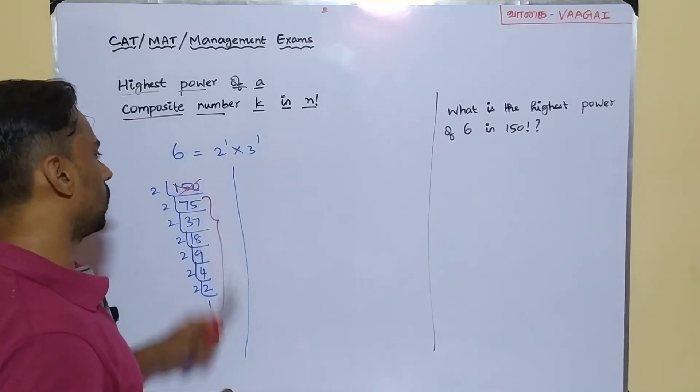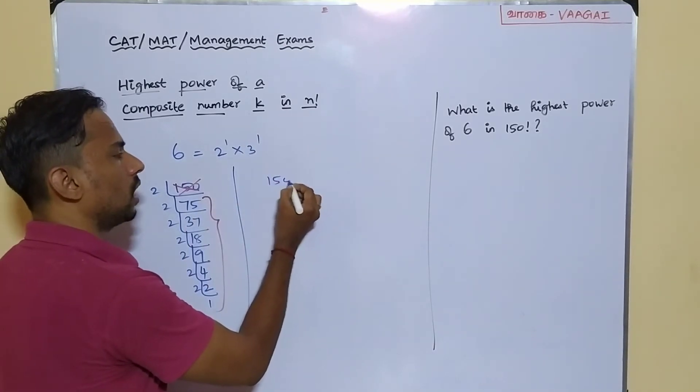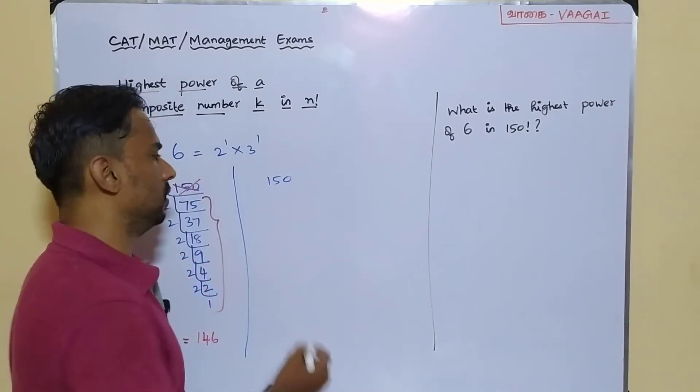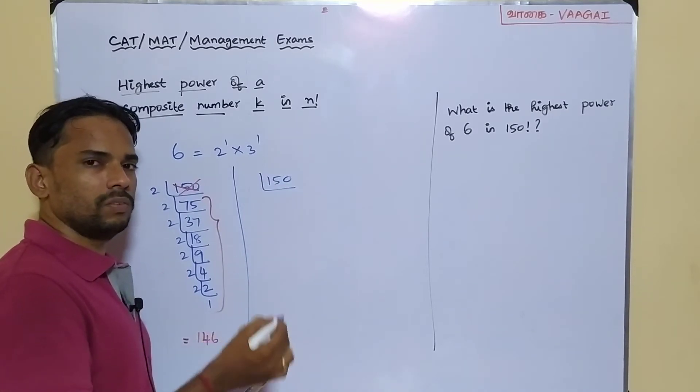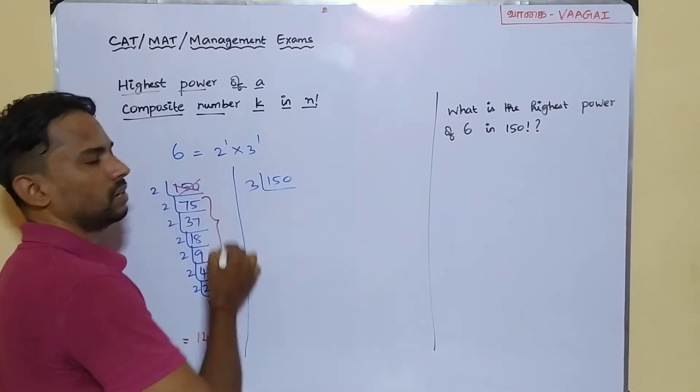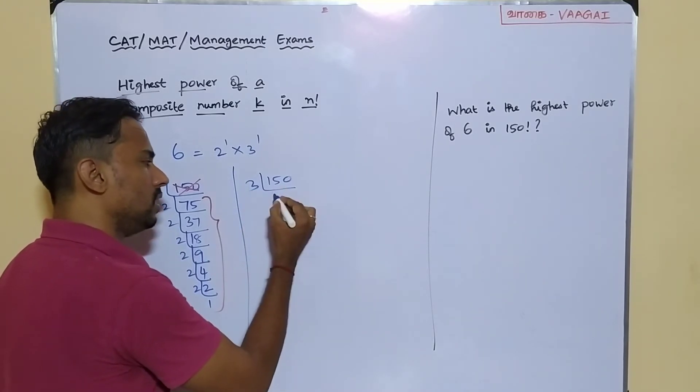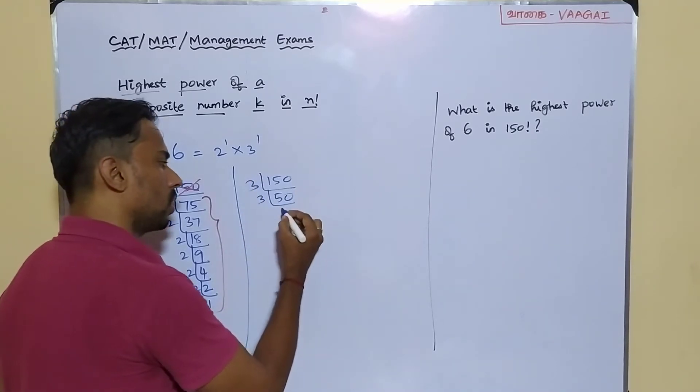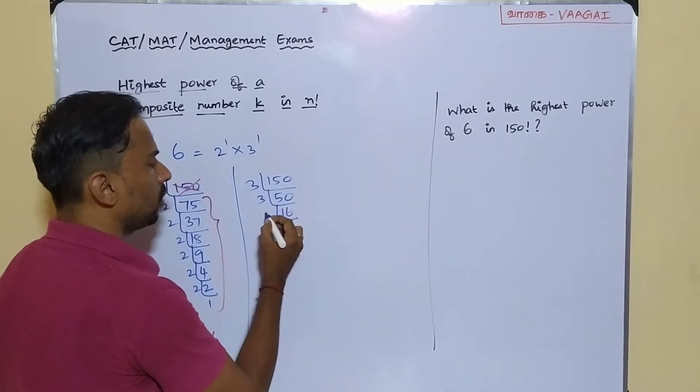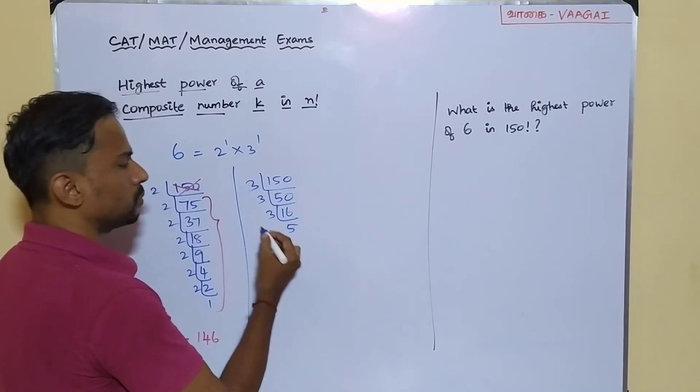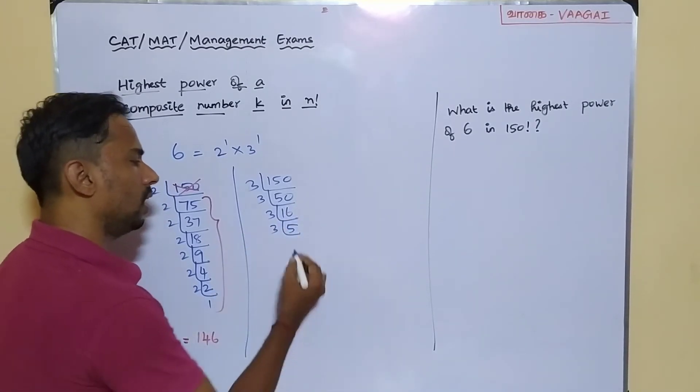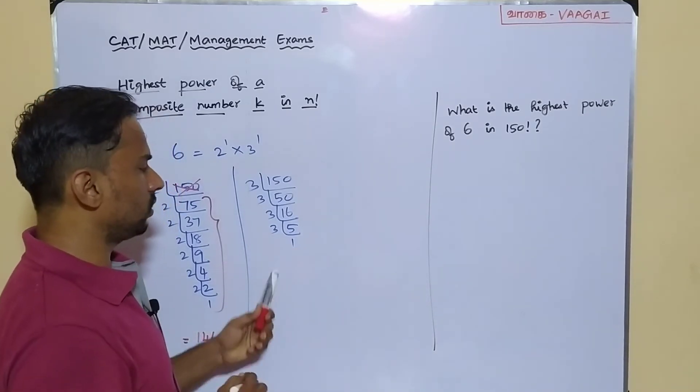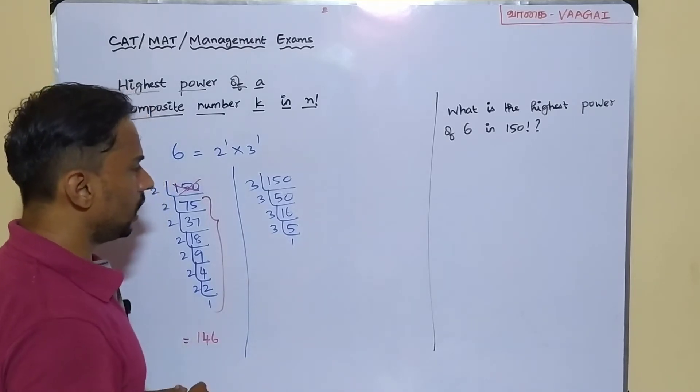I'll just put a line here. I'm going to do the same process inside this 150 factorial. What is the highest power of 3 available? For which I have to do my repeated step division process now by the number 3. 150 in 3 is exactly 50 times. And again 3, I can go up to 16 times. And once again 3, I've got 5 times. And once again by 3, if I do, I'll have only one time. Further, I can't proceed. We can stop here.